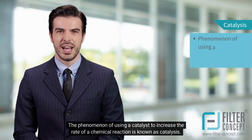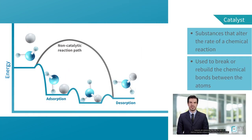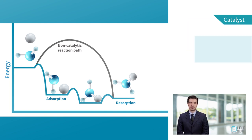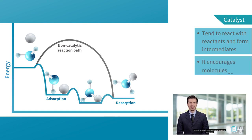The phenomenon of using a catalyst to increase the rate of a chemical reaction is known as catalysis. Catalysts are substances that alter the rate of a chemical reaction without itself undergoing any permanent chemical change. They are used to break or rebuild the chemical bonds between the atoms which are present in the molecules of different elements or compounds. In the process, they tend to react with reactants to form intermediates and at the same time facilitate the production of the final reaction product. After going through the whole process, a catalyst regenerates. In short, catalysts encourage molecules to react and make the whole reaction process easier and more efficient.